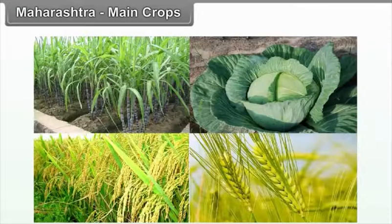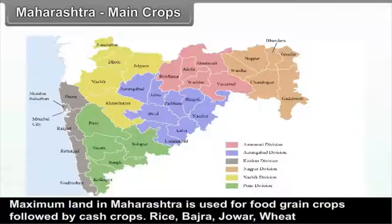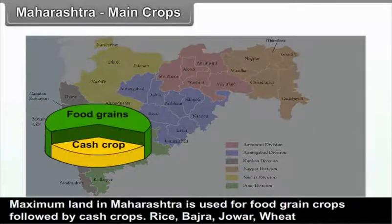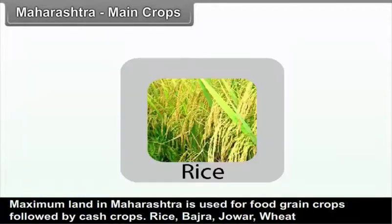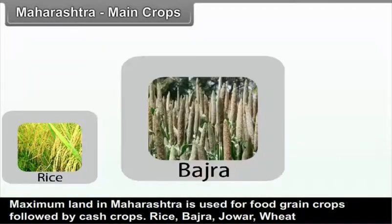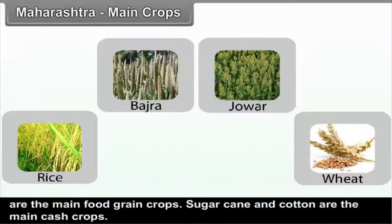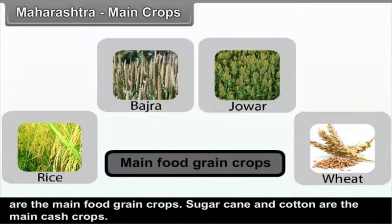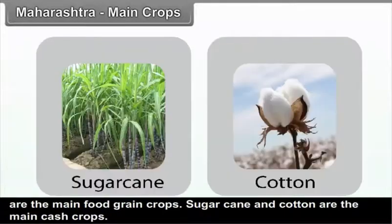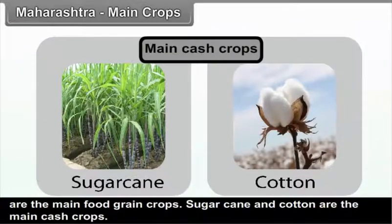Maximum land in Maharashtra is used for food grain crops, followed by cash crops. Rice, Bajra, Jowar, and Wheat are the main food grain crops. Sugarcane and Cotton are the main cash crops.